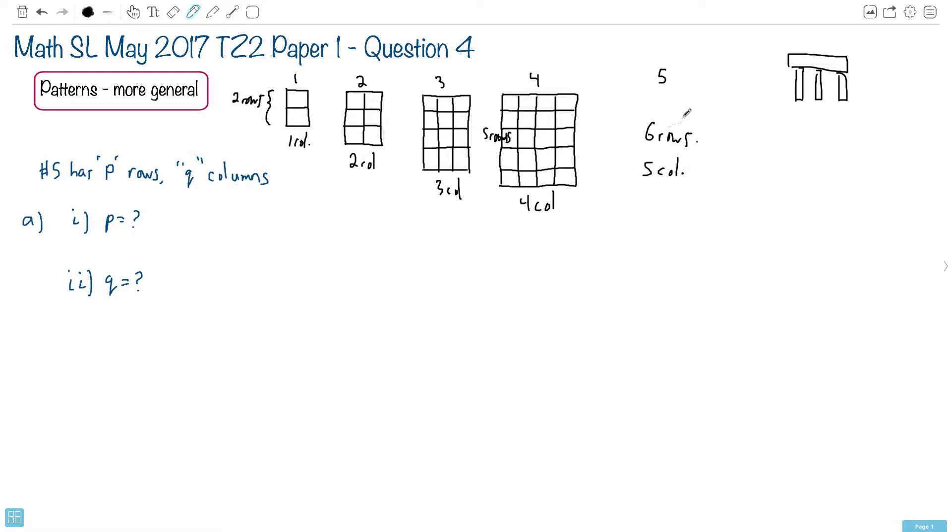And this is all you have to do. It's actually that easy. So P, since it's a number of rows, P is just six. And Q is a number of columns, so that's just five. So Q equals five. That's it.